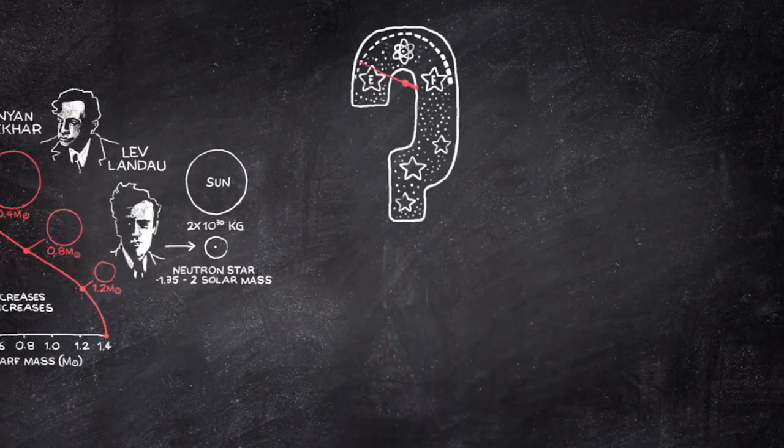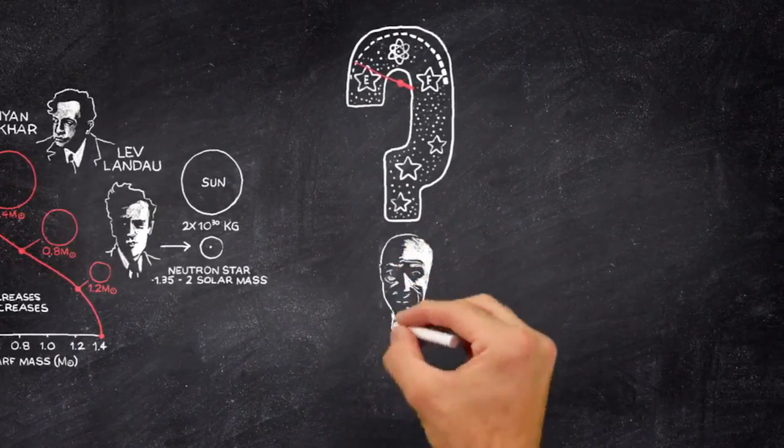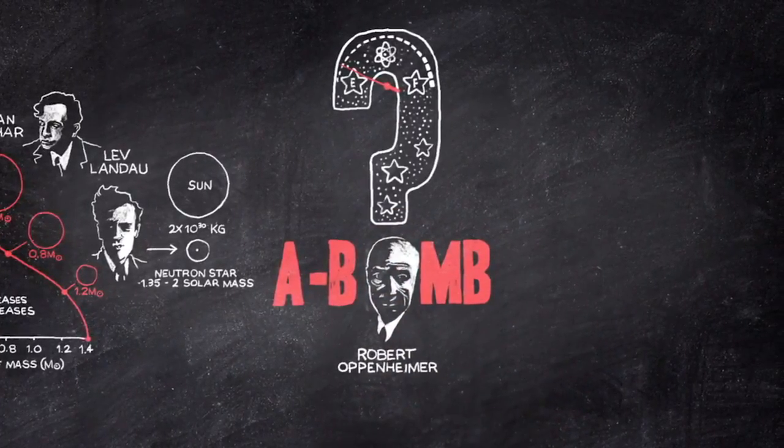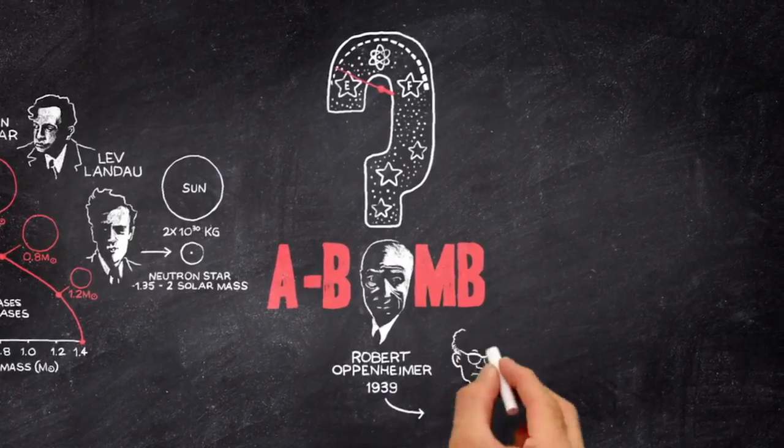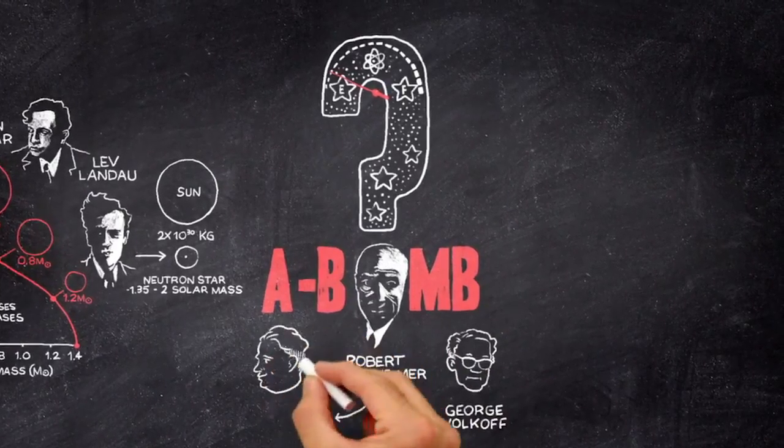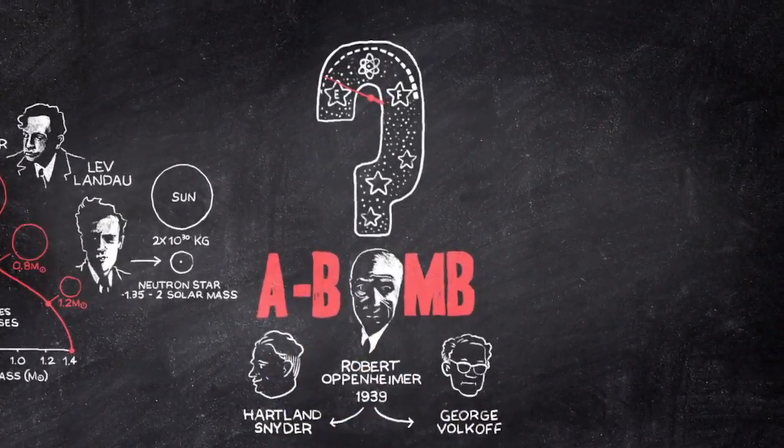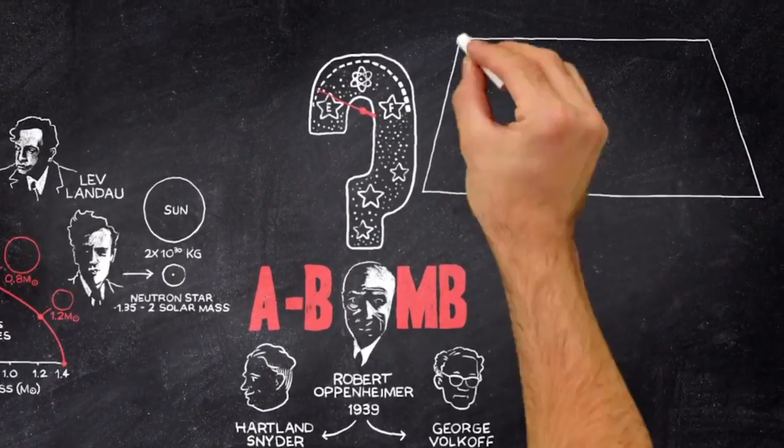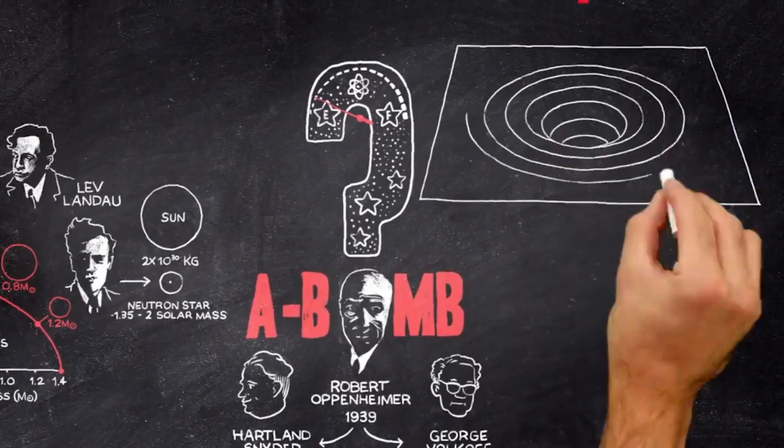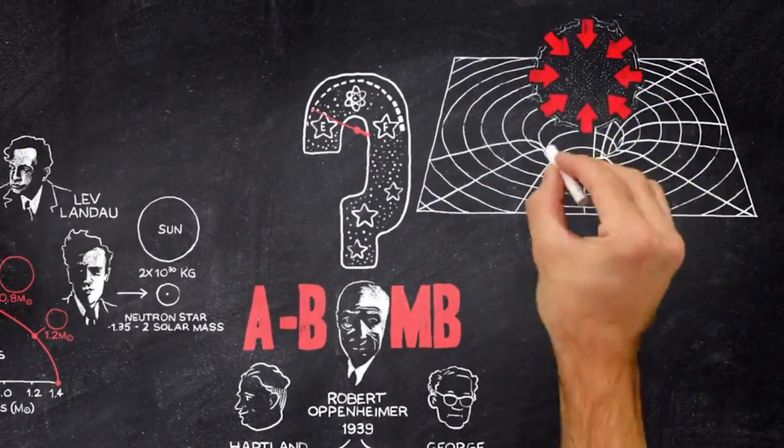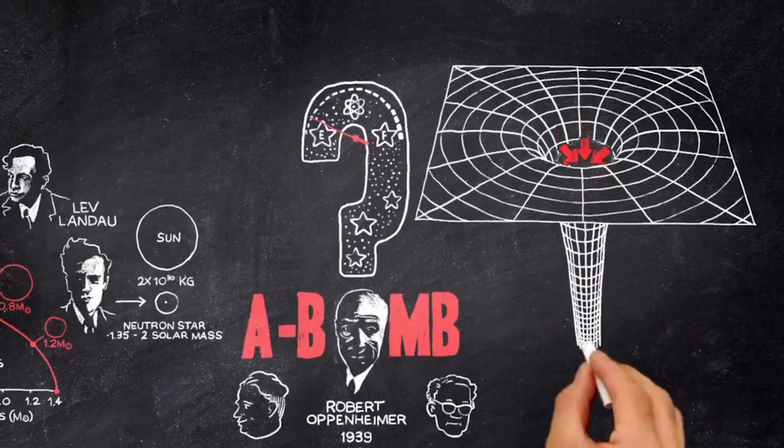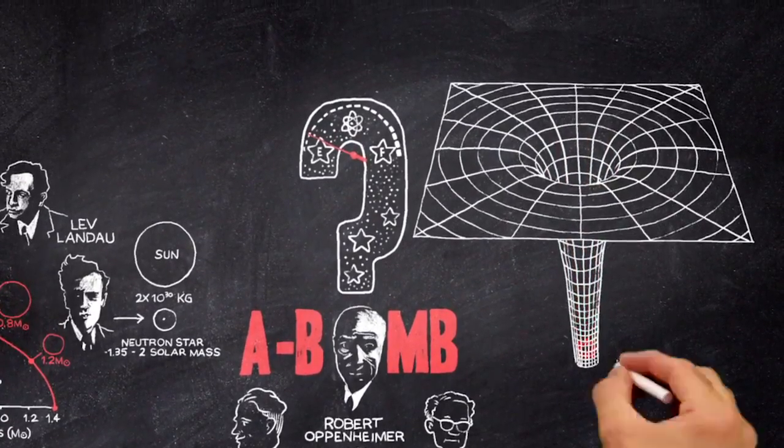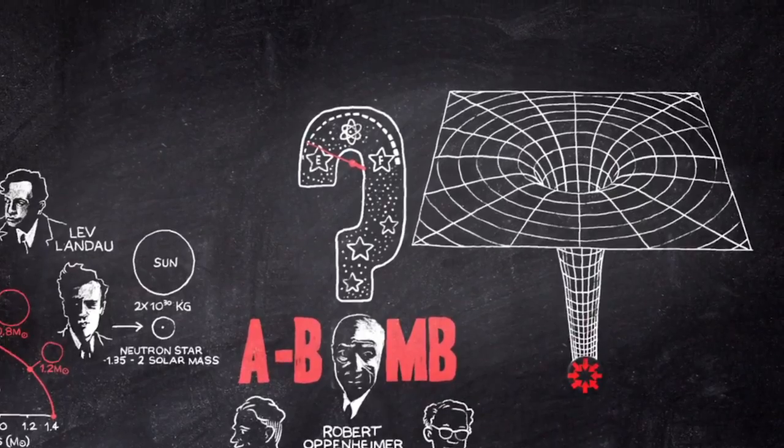The problem was investigated by Robert Oppenheimer, of later atom bomb fame. In a couple of papers in 1939, with George Volkoff and Hartland Snyder, he showed that such a star could not be supported by pressure, and that if one neglected pressure, a uniform spherically symmetric star would contract to a single point of infinite density.